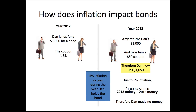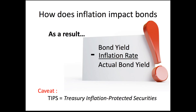Dan now has $1,050 in 2013. But due to 5% inflation, the $1,000 in 2012 money is actually equal to $1,050 in 2013 money. So those two numbers are equal — even though Dan might think he made $50, he actually made no money because his buying power is exactly the same in 2013 as it was in 2012. So how does inflation impact bonds? It drastically impacts bonds. To find the actual yield, you take the bond yield and subtract the inflation rate. In this scenario, the bond yield was 5% and the inflation rate was also 5%, so the actual bond yield was 0%. A caveat to this is something called TIPS — Treasury Inflation-Protected Securities.